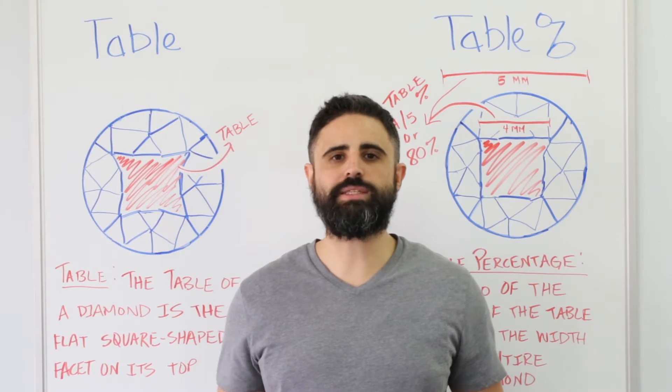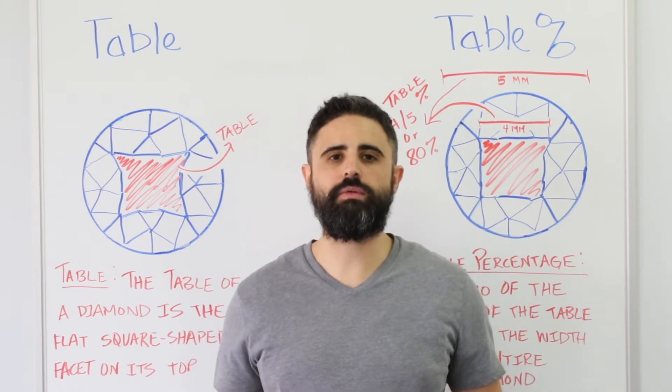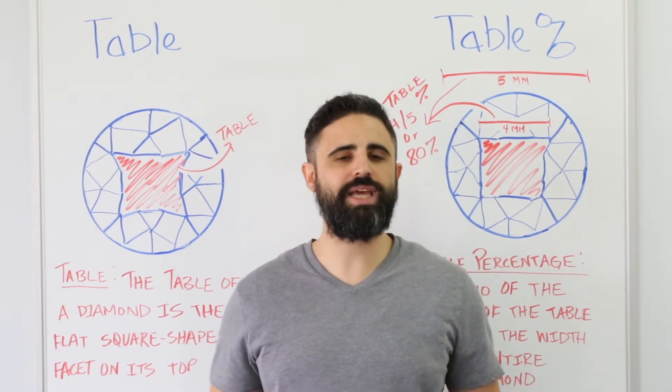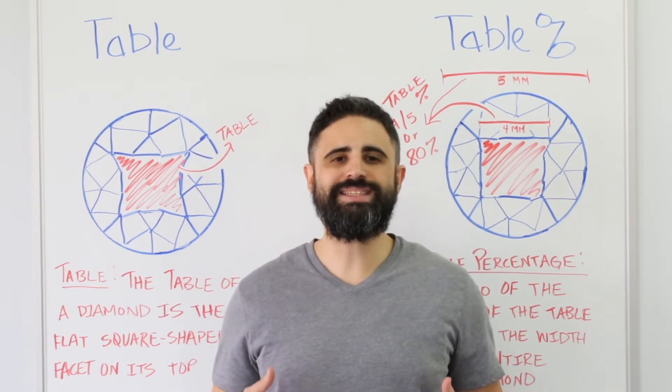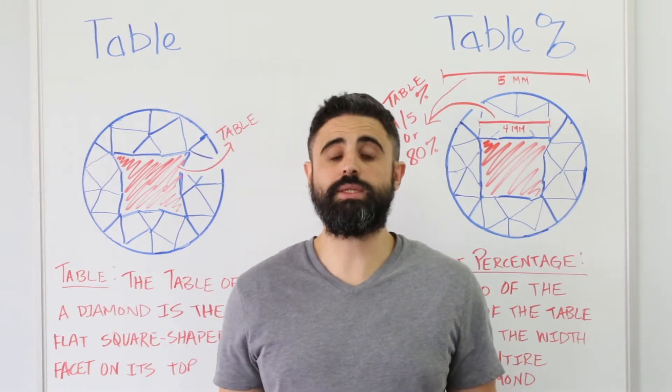Table is important because it affects the brilliance and sparkle of the diamond. However, a larger table does not mean a larger or more brilliant stone.